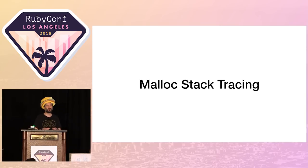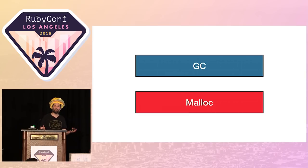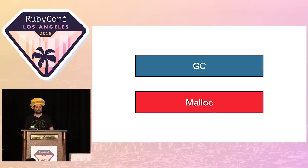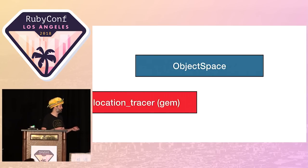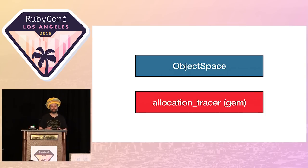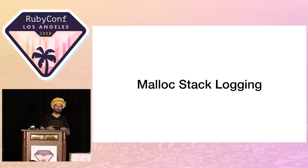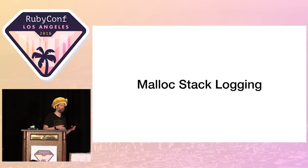With Ruby programs we have to think about two different places where we allocate memory: one is in the garbage collector, and the other is from malloc. We allocate Ruby objects using Ruby's garbage collector, and we allocate other stuff — for example, strings — using the system's malloc. We have a lot of tools for profiling objects allocated in the GC, for example object_space and the allocation tracer gem, but they're not so good at profiling malloc allocations.